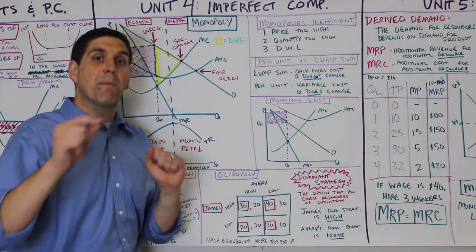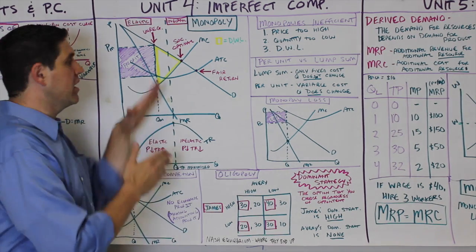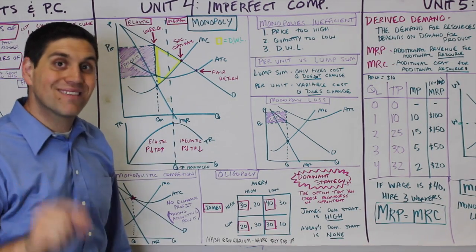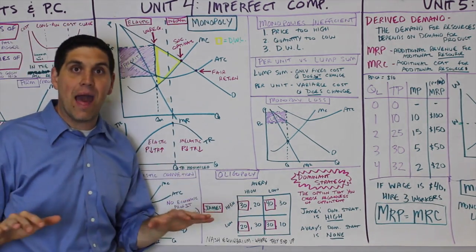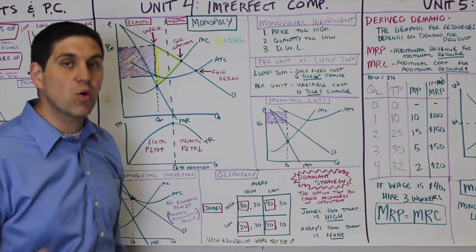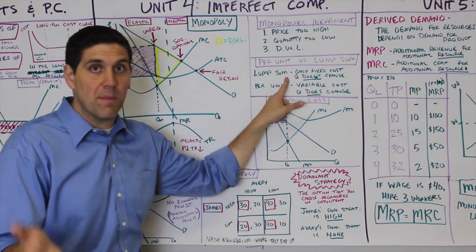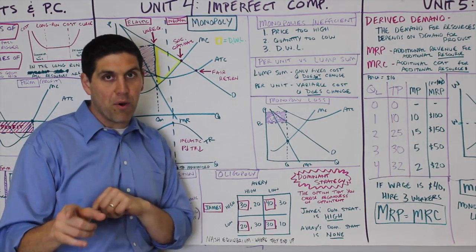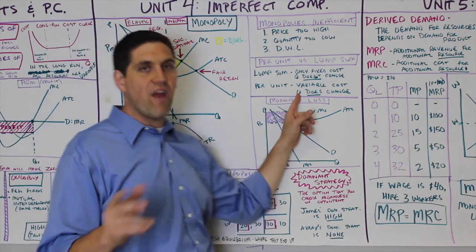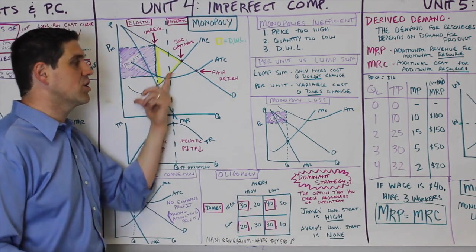Now is a good time to discuss the difference between a per-unit tax and a lump-sum tax. A per-unit tax on a monopoly increases marginal cost, so price goes up and quantity goes down. A lump-sum tax affects only fixed costs, so quantity does not change — price and quantity stay the same because marginal cost doesn't change. This also applies to a lump-sum subsidy. However, a per-unit tax or per-unit subsidy changes marginal cost, which changes price and quantity.